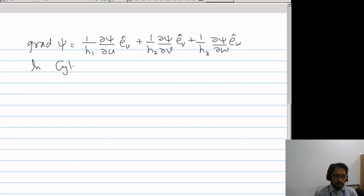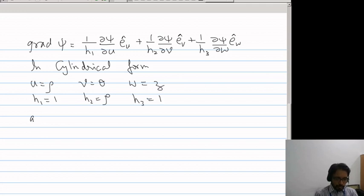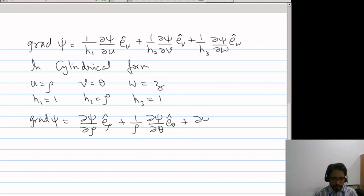In the cylindrical form, u is rho, v is theta and w is z, h1 is 1, h2 is rho, h3 is 1, so grad psi will be ∂psi/∂rho e_rho plus 1/rho ∂psi/∂theta e_theta plus ∂psi/∂z e_z.